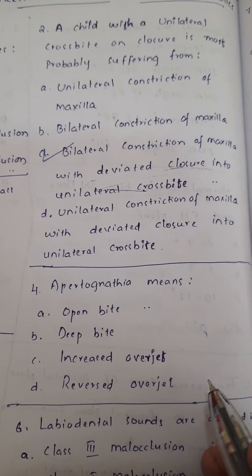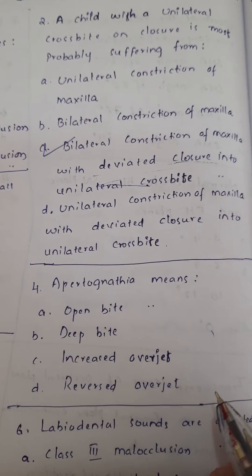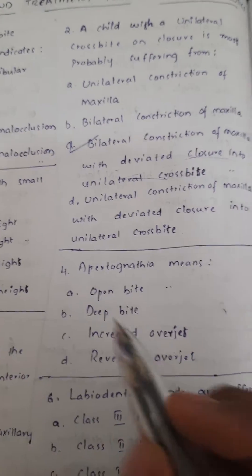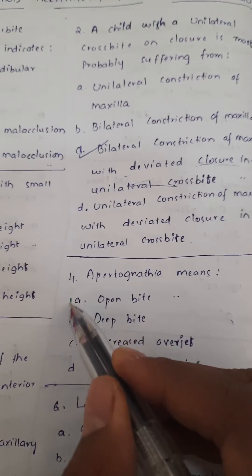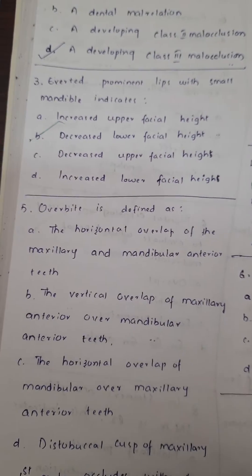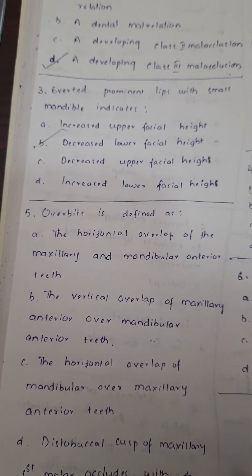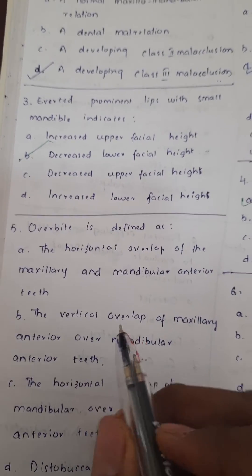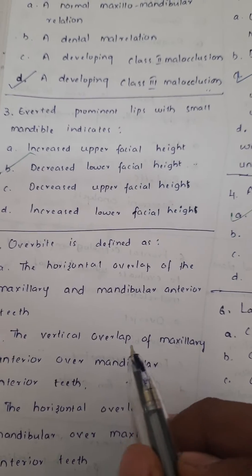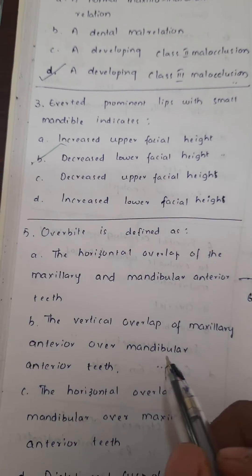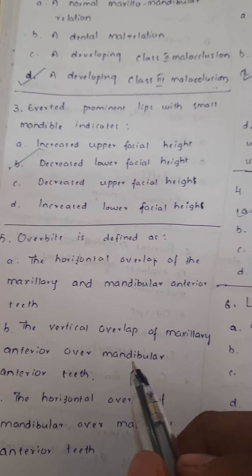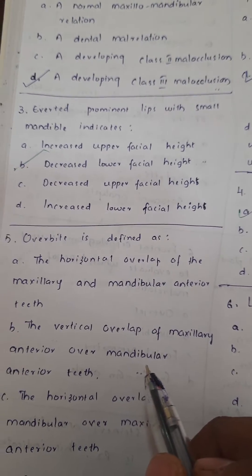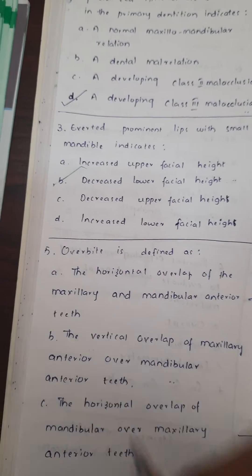Apertognathia is another name for open bite. Overbite is defined as the vertical overlap of maxillary anterior teeth over mandibular anterior teeth.